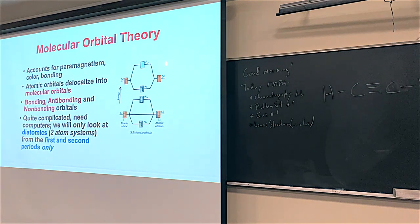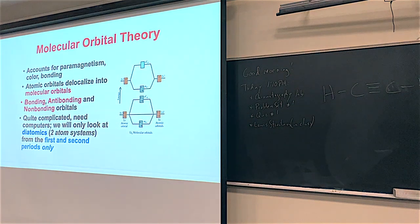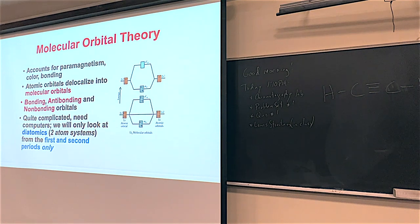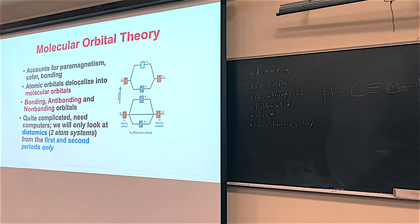This particular MO diagram is for dilithium — Li2. In Star Trek, dilithium is used to make the Enterprise go to warp drive. Dilithium is actually a real molecule that can be made. This diagram shows that dilithium is real. After we learn how MO diagrams work, we'll be able to interpret this kind of stuff. You don't have to like Star Trek to get an A in this class.